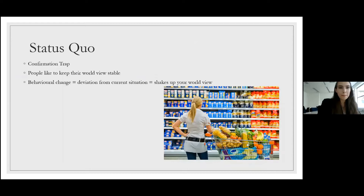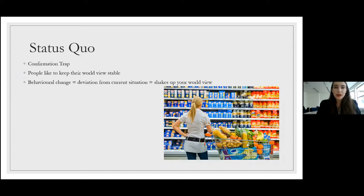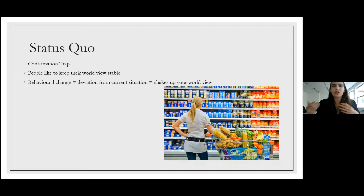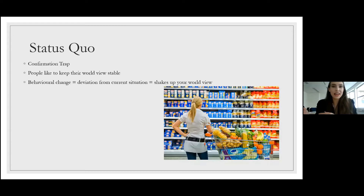Another thing that really complicates marketing your burger is the fact that people don't like change. As humans, we fall into a confirmation trap where we assess new information based on what we already know. For example, if you're scrolling on Facebook and see an article about red meat causing diseases: if you're already vegetarian, you're more likely to find that information truthful and reliable, whereas if you eat meat regularly, you might think it's an exaggeration. In a supermarket, vegetarians will go to the vegetarian section, but meat-eaters stuck in their confirmation trap might not even go there.